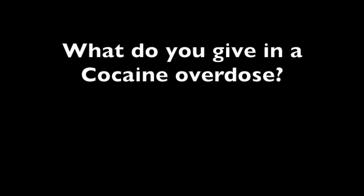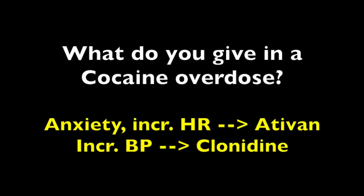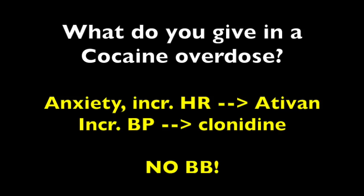For cocaine there's no particular antidote, but you want to treat the symptoms. If the patient is having a lot of anxiety or an elevated heart rate, you can give Ativan. You can give clonidine for high blood pressure. You do not want to give any type of beta blocker — with beta blockers and cocaine there will be unopposed alpha stimulation, possibly worsening cocaine's alpha stimulation, which could lead to coronary vasoconstriction. No beta blockers when you suspect cocaine use, especially in an overdose.